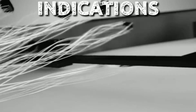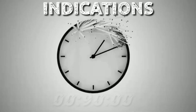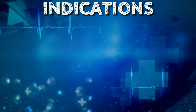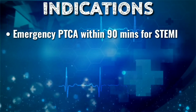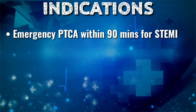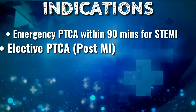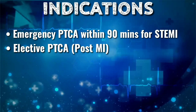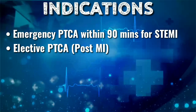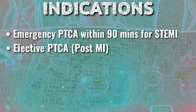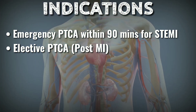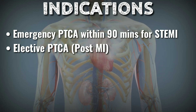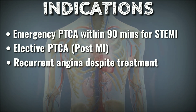PTCA with stent placement within 90 minutes of the onset of pain is the optimal treatment of transmural ST-segment elevation myocardial infarction. Elective PTCA may be appropriate for post-MI patients who have recurrent or inducible angina before hospital discharge, and also for patients who have angina and remain symptomatic despite medical treatment.